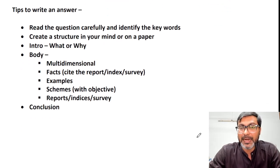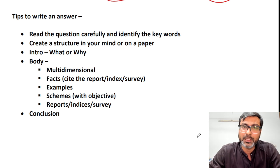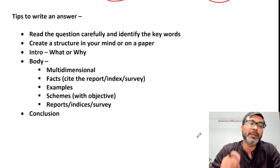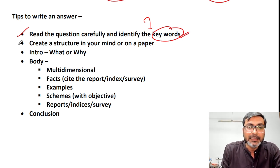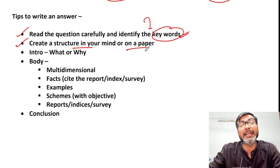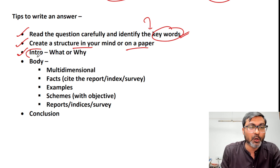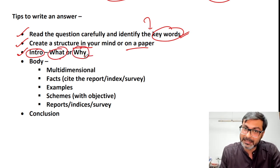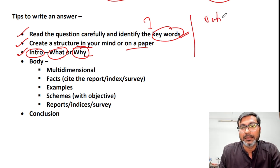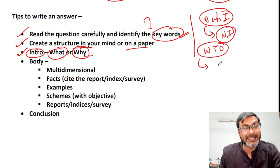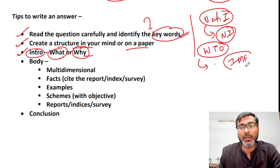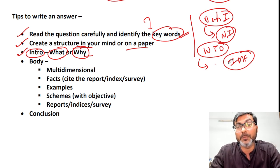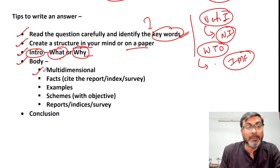Now let's come to tips for writing an answer, specially in ESI. All subjects share the same basics, but in ESI there are a couple of things to keep in mind. First, read the question carefully and identify the keywords. Then create a structure in your mind or on paper — only then start writing. In the introduction, write what or why. For example, a question on national income — define what national income is. A question on WTO — briefly state what WTO is and its objectives. A question on IMF — define IMF and its basic objectives.